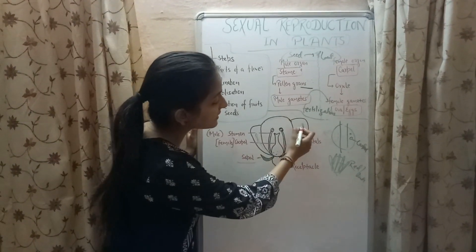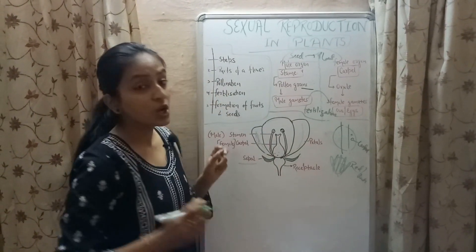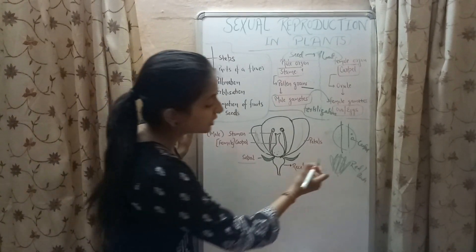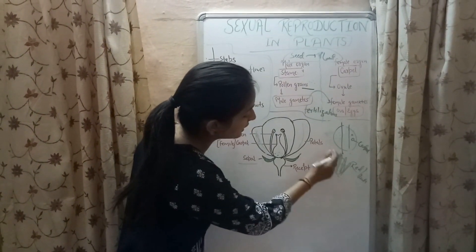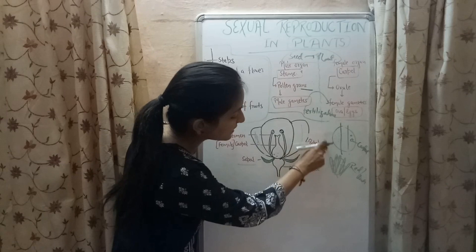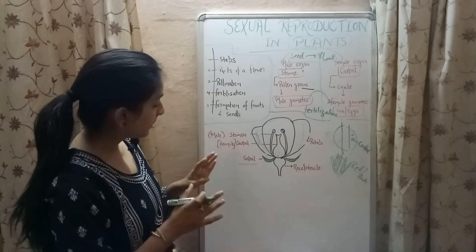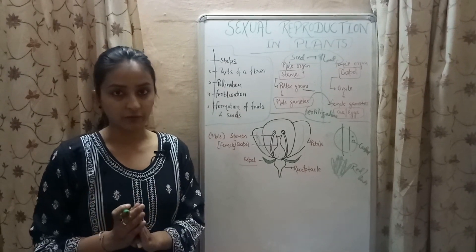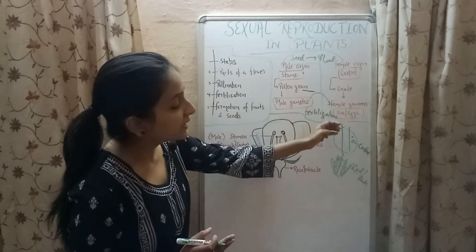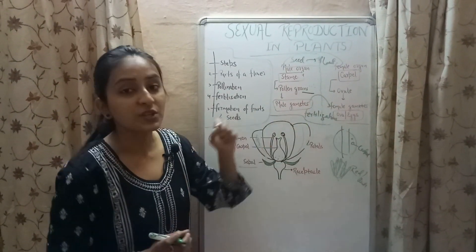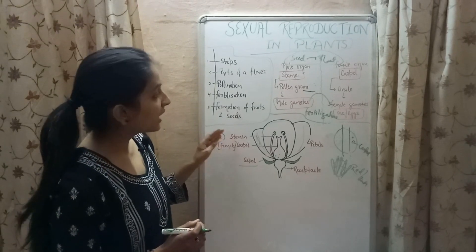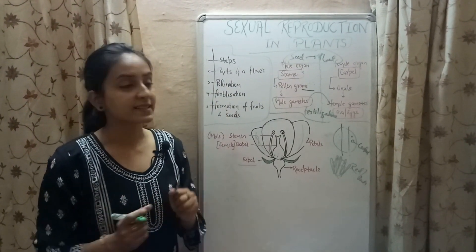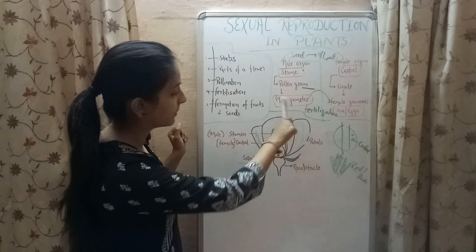Petals are the colorful parts of a flower. In a rose, whether red, pink, white, or any other color, the color of the rose is due to the color of its petals. Carpels are the female reproductive organ of the flower which contain the female gametes known as ova or eggs. Stamen are the male reproductive organ of a flower which contain pollen grains, inside which the male gametes are present.